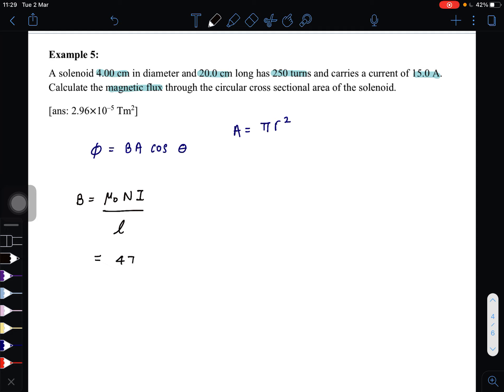So we can find magnetic field first: 4π × 10⁻⁷ times the number of turns times the current divided by the length, which is 20 cm. Convert to meters, so we get 0.0236 tesla.